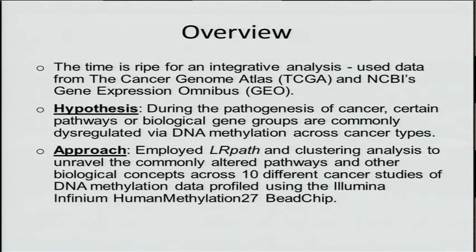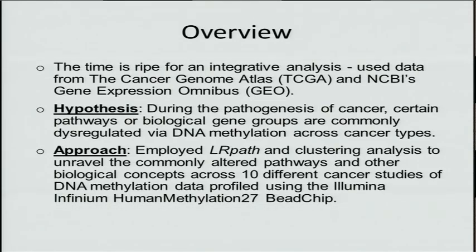Our hypothesis was that during carcinogenesis, certain pathways or biological gene groups would be commonly dysregulated by DNA methylation across cancers. The approach we took was to use our newly developed web-based program called LRPath, along with clustering analysis available on the website, to look at commonly altered pathways and other biological concepts across 10 different cancer studies profiled using the Illumina B chip.